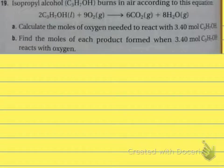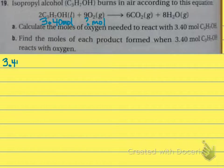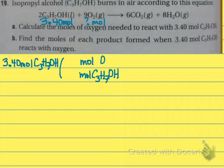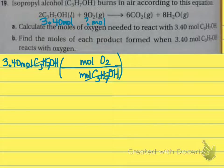Letter A: calculate the moles of oxygen needed to react with 3.40 moles of the alcohol. We start with our 3.40 moles of alcohol. Moles of alcohol go on the bottom, and our other substance on top, because we're using our mole ratio — it's our only way to convert from substance to substance. The numbers in our mole ratio come from our coefficients: coefficient on oxygen is 9, and on our alcohol is 2.